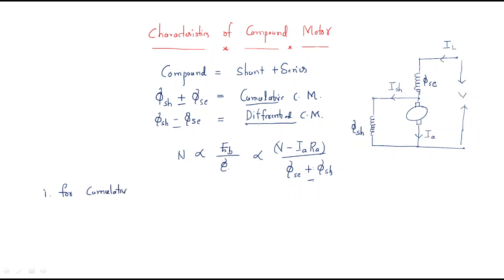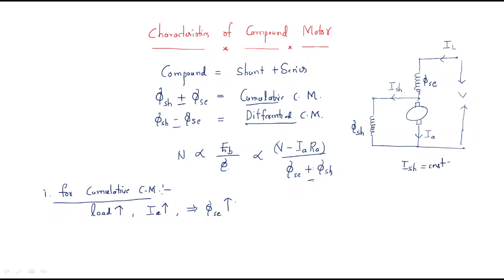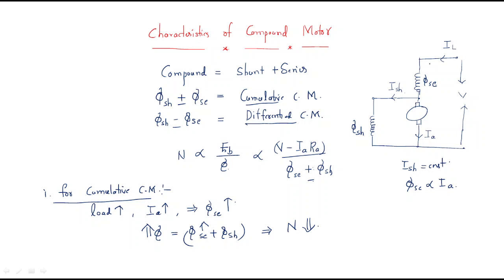First case: cumulative compound motor. In a cumulative compound motor, if the load increases, the armature current increases. When the armature current increases, the series flux increases. The shunt flux is always constant, and the series flux is proportional to the armature or load current. So the total flux — which is series plus shunt — increases, and whenever the total flux increases, the speed decreases.